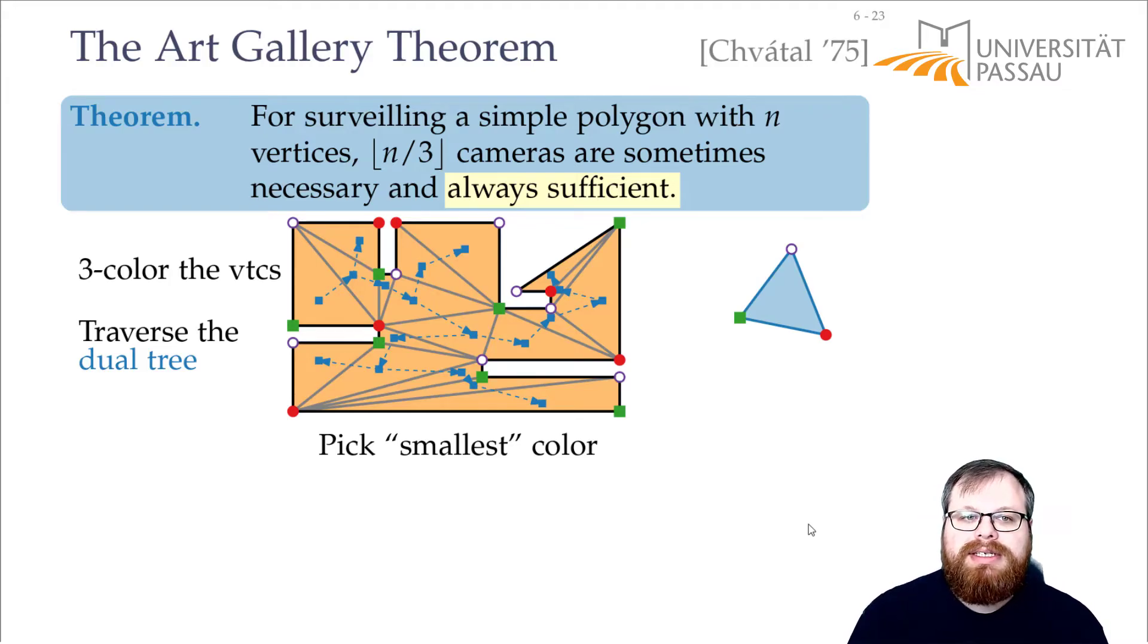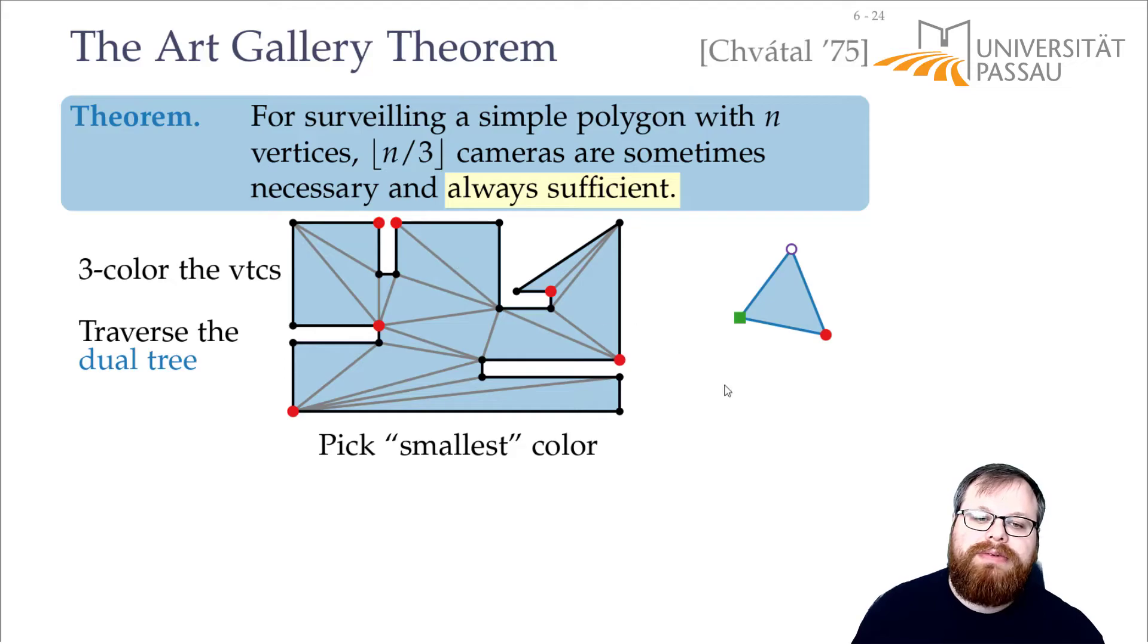So the smallest has at most n over three vertices. That means if we pick just the red vertices, that gives us a cover with at most n over three cameras. So we've basically shown the art gallery theorem, but there's one step missing.